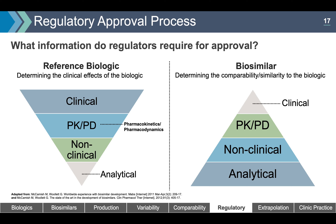Clinical data includes the various clinical trials needed to demonstrate activity. For originator products, this includes Phase 1, 2, and 3 trials across all indications sought. For biosimilars, there is no requirement for Phase 2 trials — only a Phase 1 trial for pharmacokinetic and pharmacodynamic data, followed by a Phase 3 trial in a sensitive population. Non-clinical data includes pharmacology of the molecule such as in vitro activity — binding to the antigen or target, effects on the target, recruitment of the immune system, and other product-specific activities deemed appropriate by manufacturer and regulator.